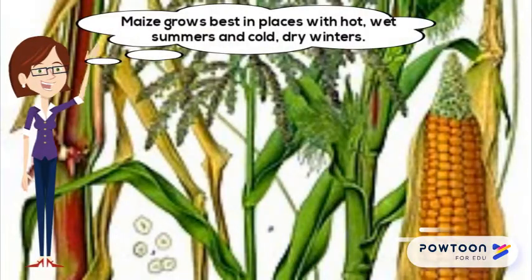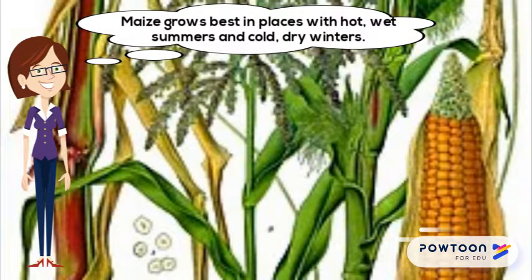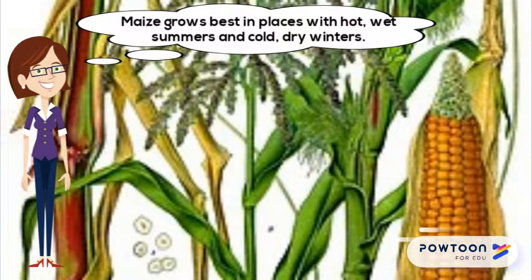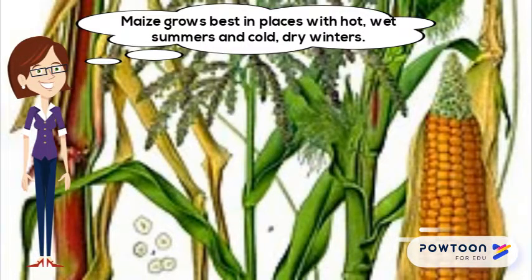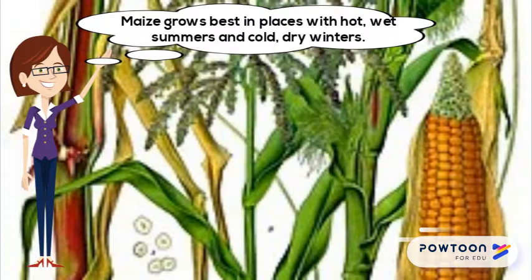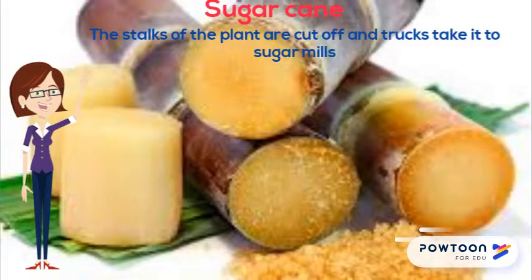Maize grows best in places with hot wet summers and cold dry winters. It is grown in the eastern half of South Africa where there are hot dry summers and cool wet winters. Wheat is harvested in the summer.